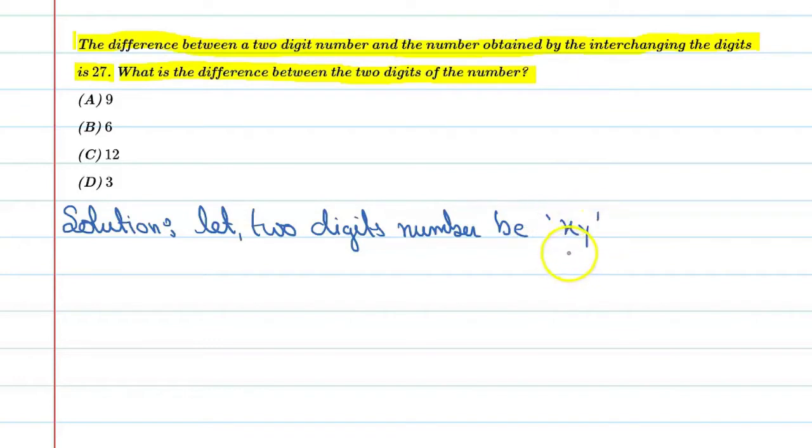So this means y is a ones place digit and x is a tens place digit. If you write it in expanded form, then the value will be 10x plus y.